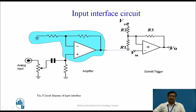This is the amplification of any analog input. The amplified analog input is then given to the Schmitt trigger input. The op-amp is used as a Schmitt trigger. We give the input voltage to the inverting input of the op-amp, and the non-inverting input is connected to the input reference voltage through R2 and R1. R3 is the feedback resistor and we get the output. We will see the details of this Schmitt trigger later.